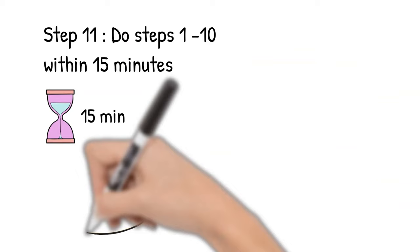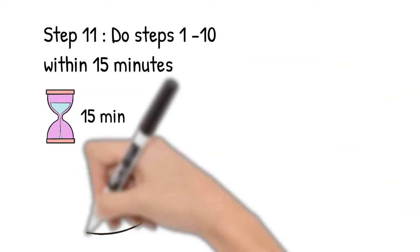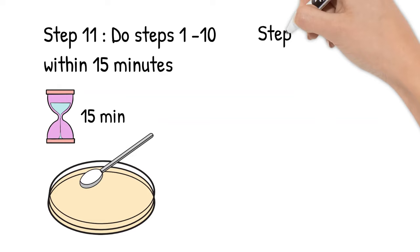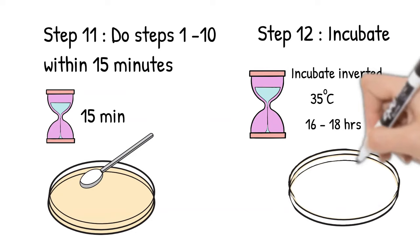Step 11: Keep in mind that this step should be complete within 15 minutes of finishing making bacteria lawn. Step 12: Incubate the plate by storing it inverted at 35 degrees Celsius for 16 to 18 hours.